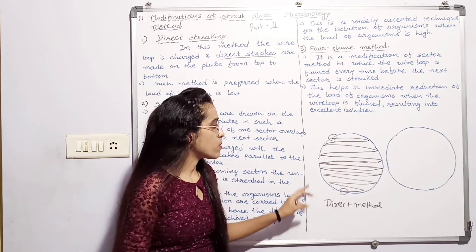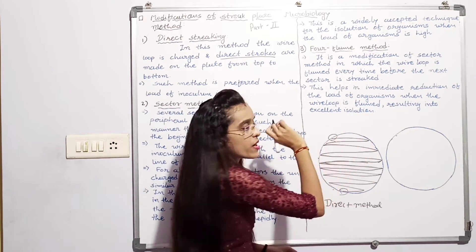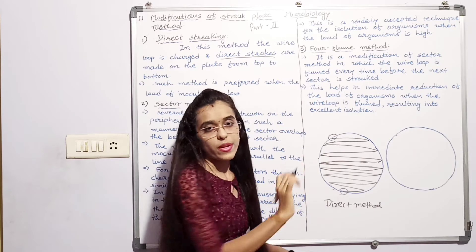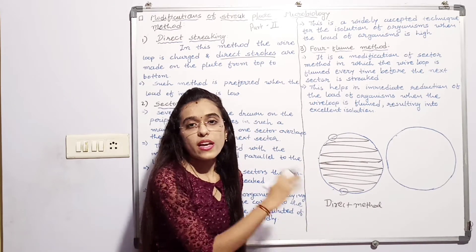We have to strip bacterial culture from whole plate, one end of the plate to another end of the plate. By this way we can get isolated colony.